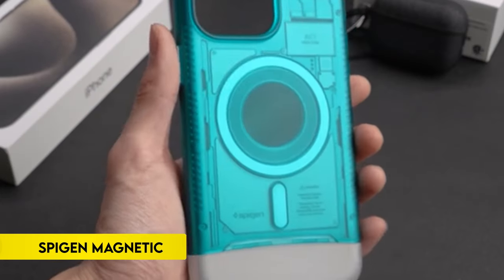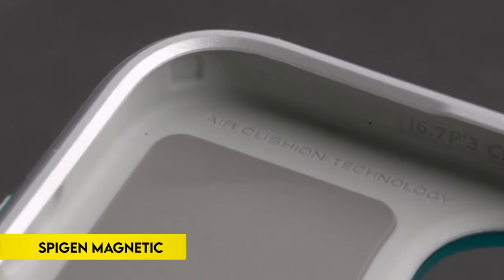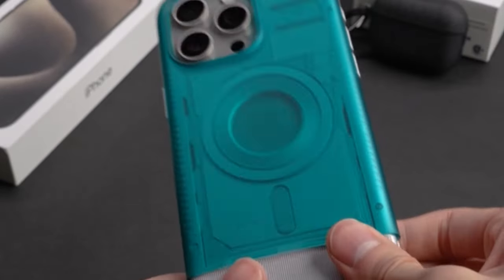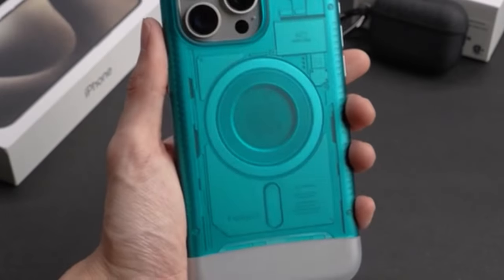On number 2, Spigen Magnetic. The iPhone 15 Pro 2023 case's premium two-piece design blends PC and TPU materials with impact foam for further durability.